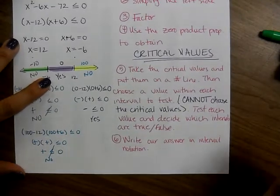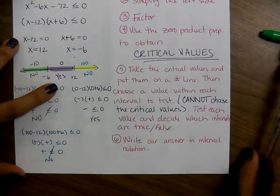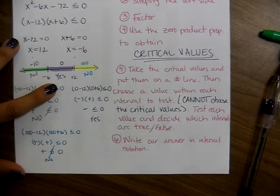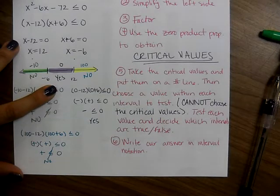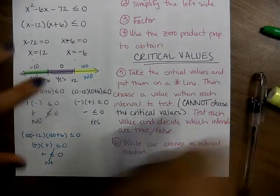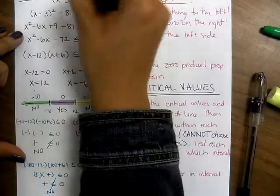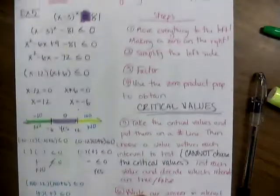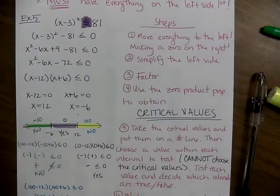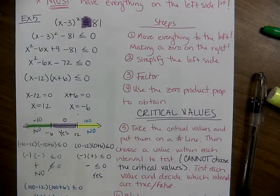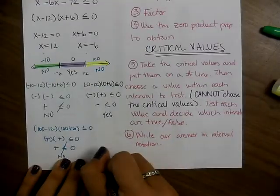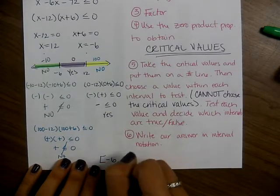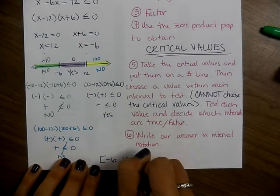The only solution that works is the middle interval from negative 6 to 12. Now decide: do I use brackets or parentheses? Go back to the original — it was less than or equal to — so use brackets. The answer is bracket negative 6, comma 12 with a bracket: [-6, 12].